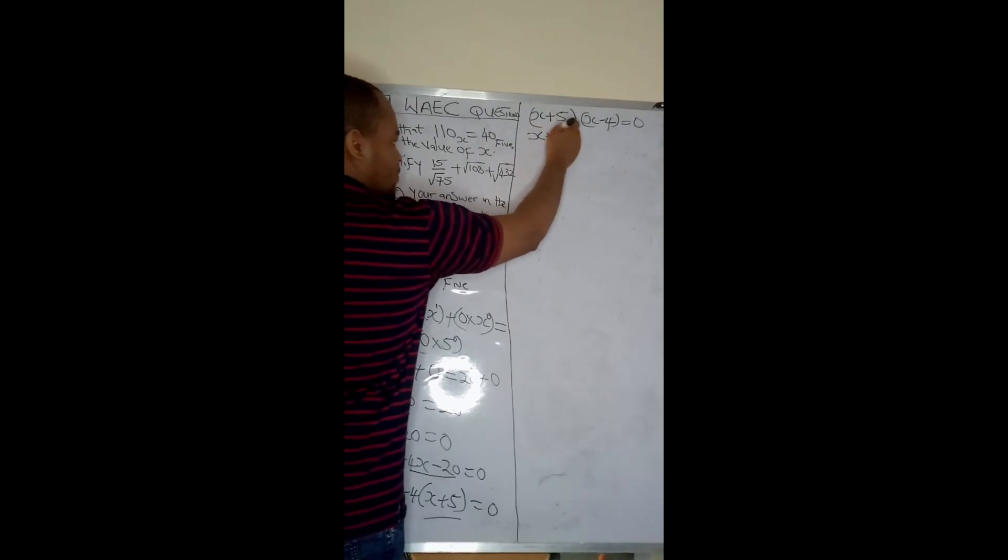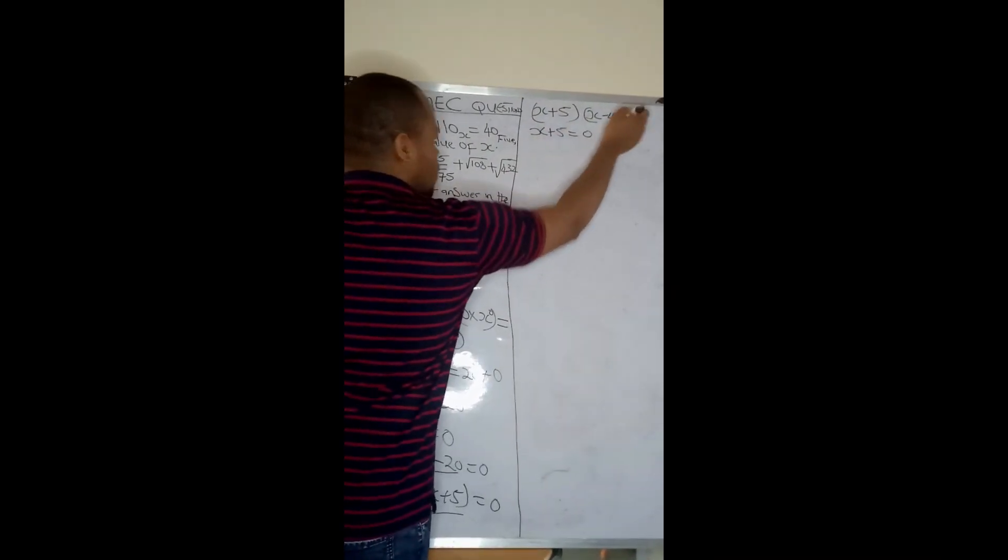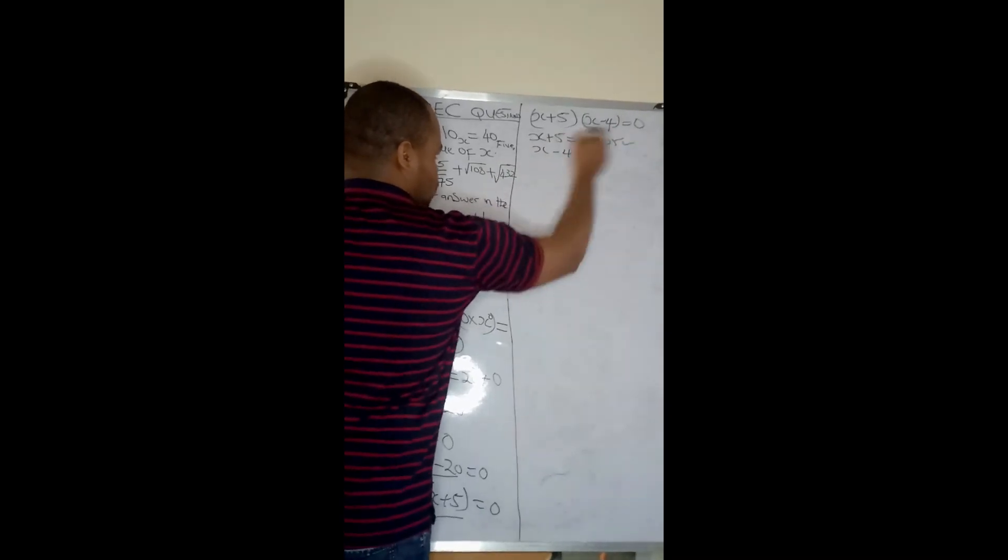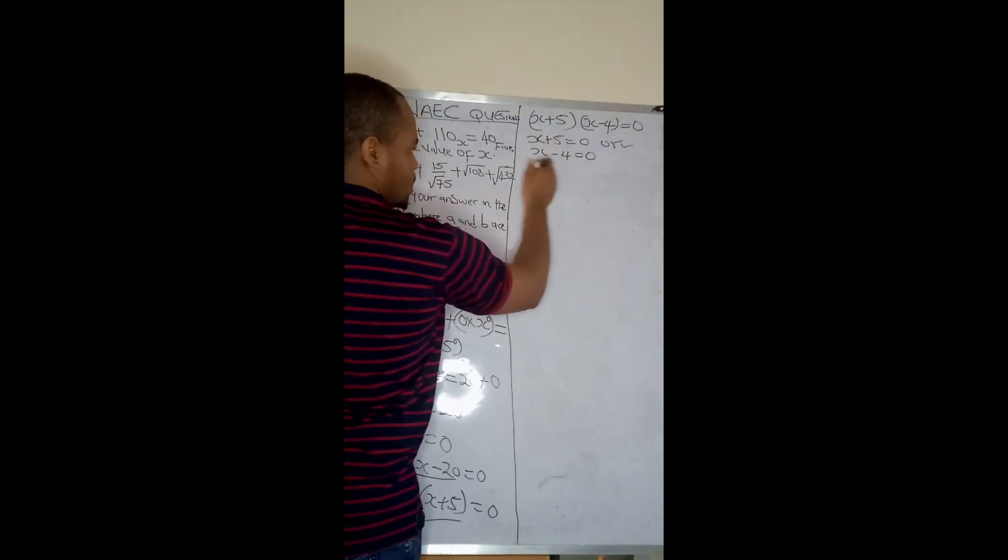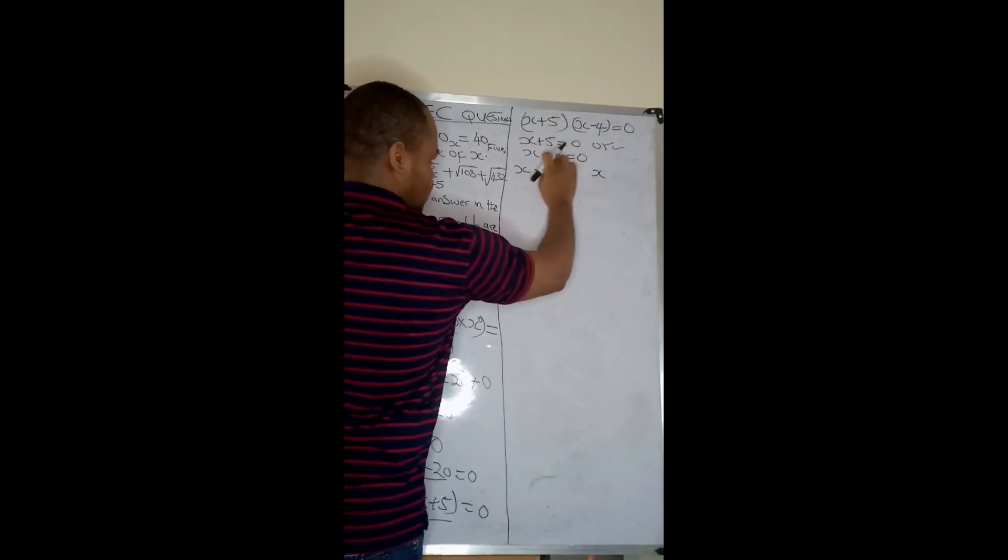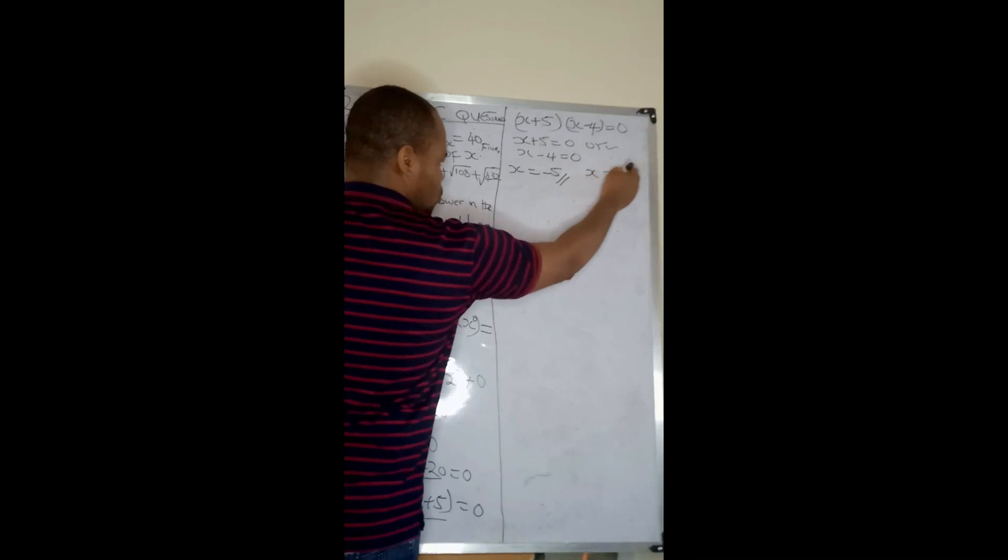Now if I have x plus 5 or x minus 4 equal to 0, it means it is either x plus 5 equals 0 or x minus 4 equals 0. If it is the first one, I'll take this plus 5 to this side, so my x will become minus 5. If it is this one, my x minus 4 crosses sign of equality becomes 4.